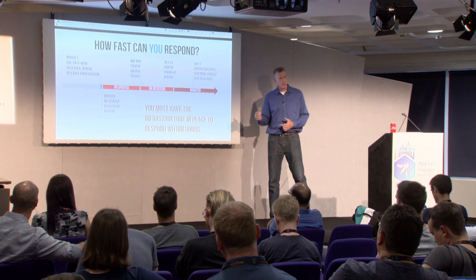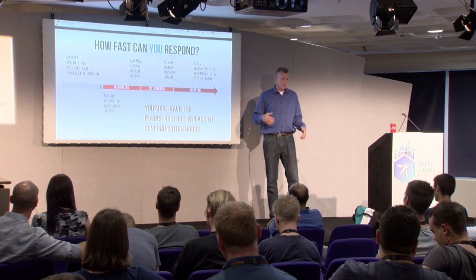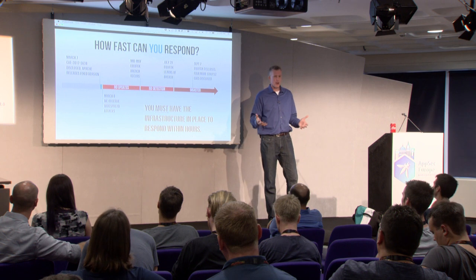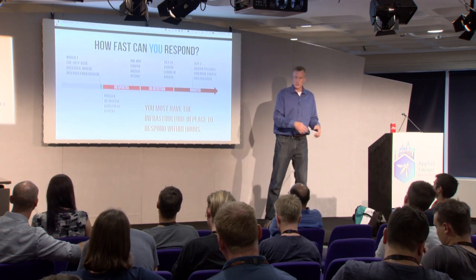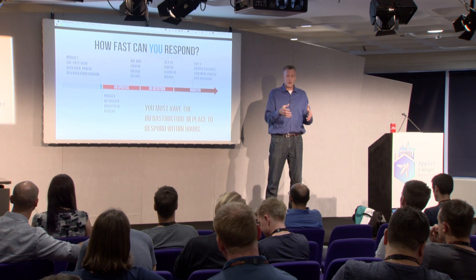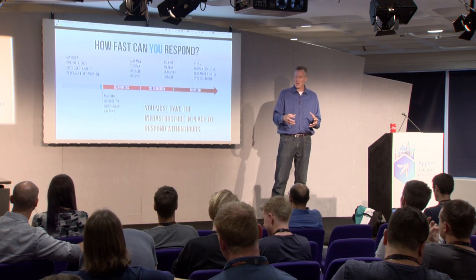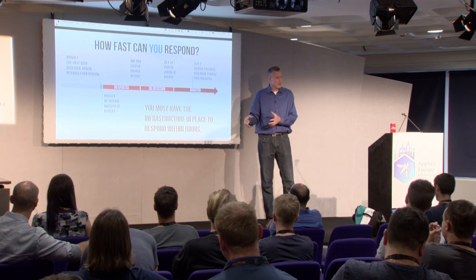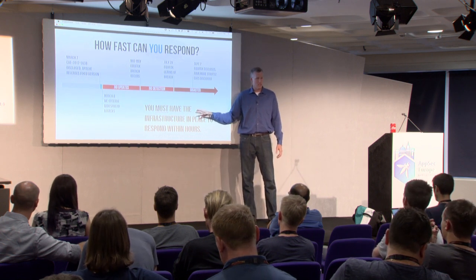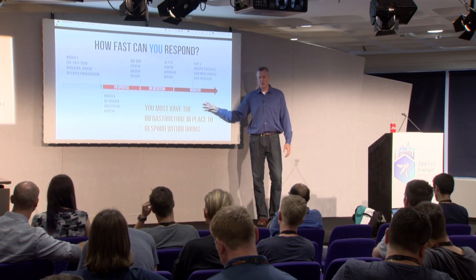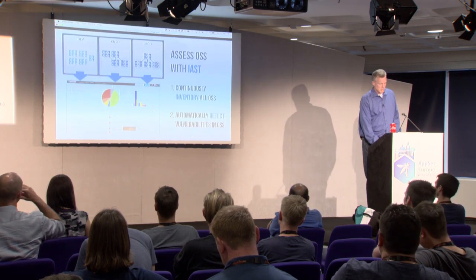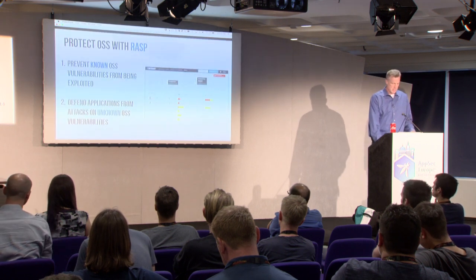You need to be able to respond to new vulnerabilities within hours — that's how fast attacks start happening against new vulnerabilities. If your current approach is to scan, when a new vulnerability comes out you've got to scan everything, figure out if you're using the library, rewrite the app, get the new library, make the app compatible, retest, and redeploy. That's really expensive. You have to have better infrastructure to respond within hours. I don't see any alternative other than RASP to get in front of these attacks. We assess all open source with IAST and protect it with RASP.